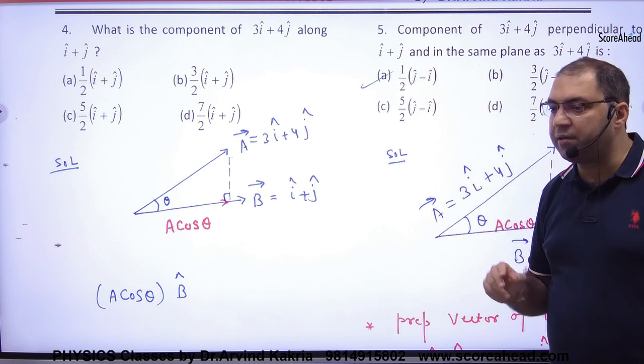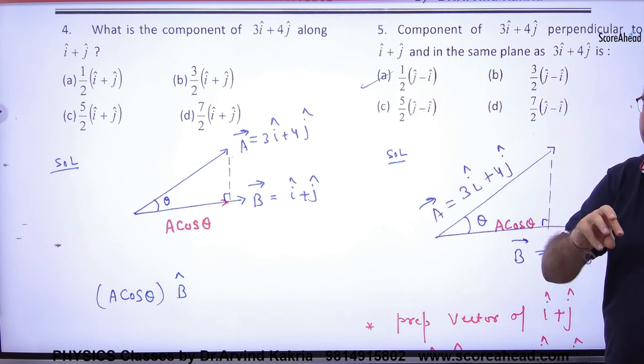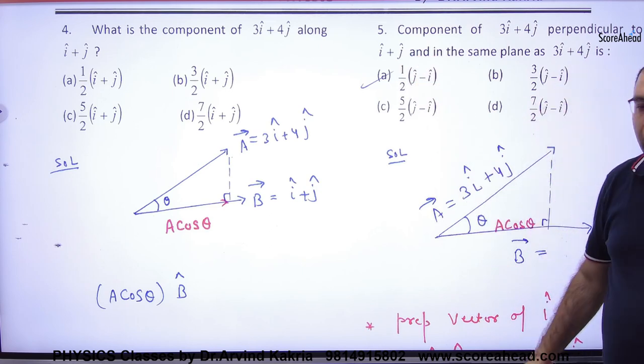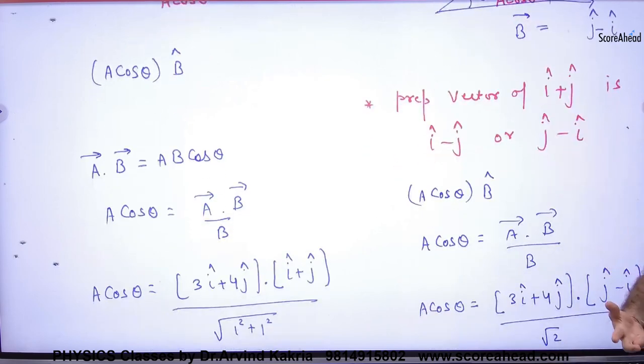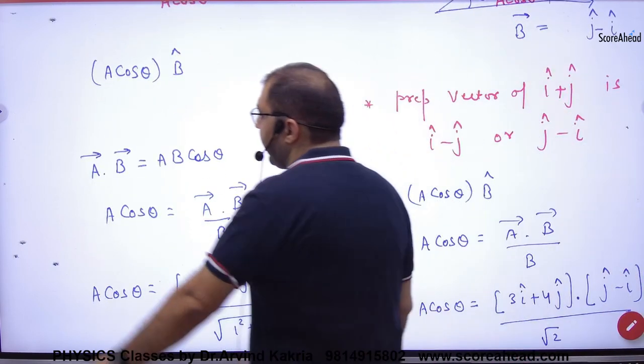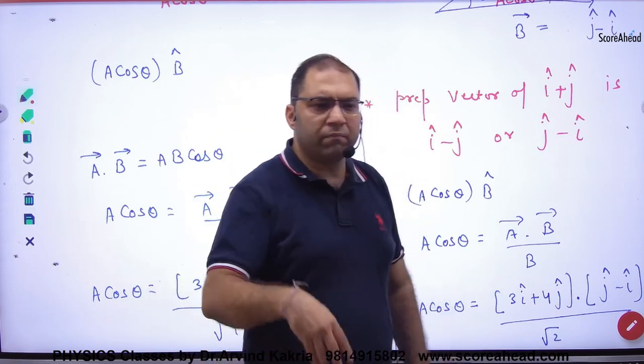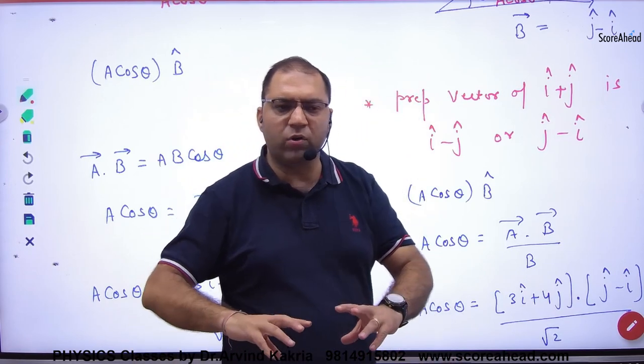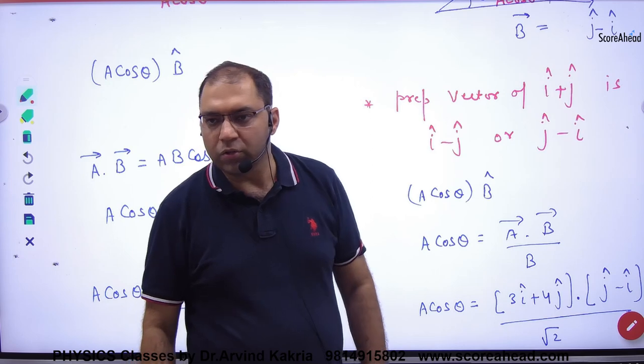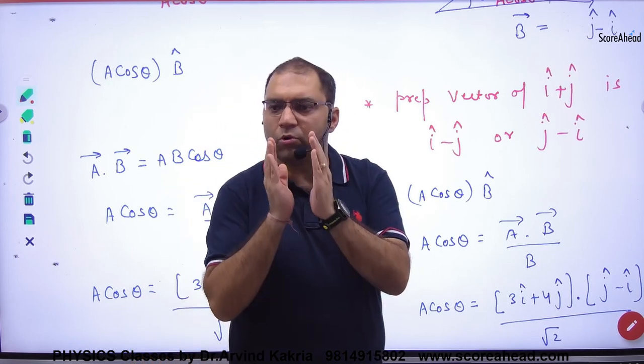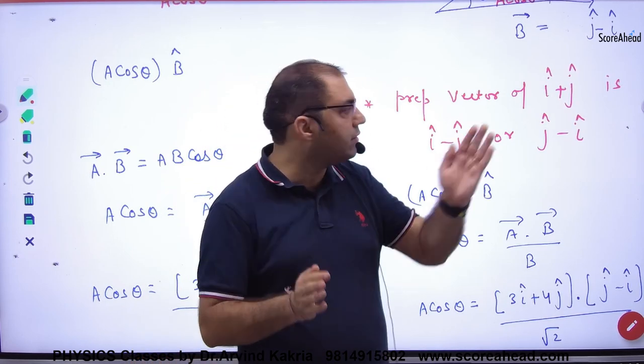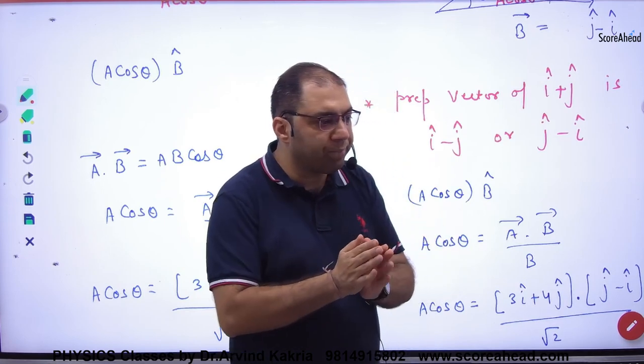Perpendicular vector. Now this is a little hit and trial. How is it? i-cap plus j-cap, if there is a vector, then I will ask you which perpendicular vector will be? Whatever the vector is perpendicular to it, what will the dot product be? Zero.